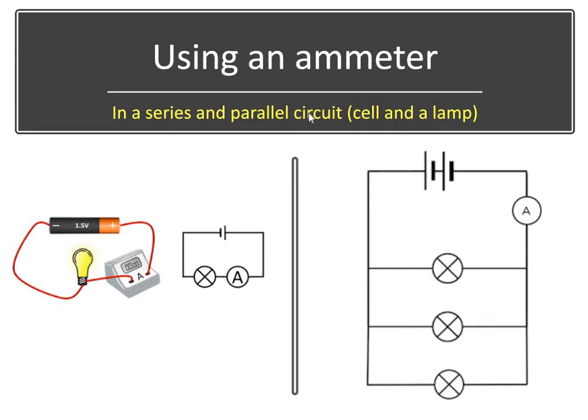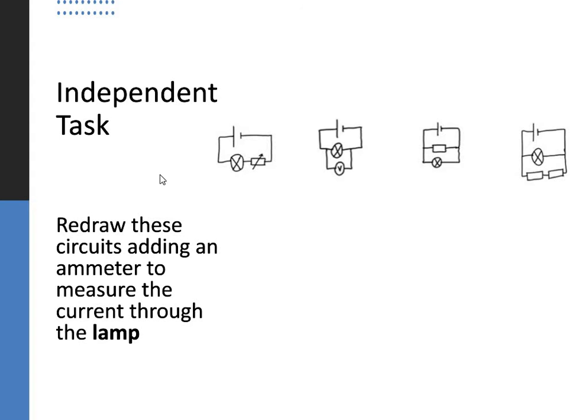So we use an ammeter in series and parallel circuits. Here's an ammeter placed in our series circuit, our single loop. Here's an ammeter placed in a parallel circuit. There's three bulbs here, and here's our ammeter. So the first independent task that you can do, and pause the video to do it, is to redraw these circuits, these four circuits, adding an ammeter to measure the current going through the lamp. So where would you put the ammeter in these circuits? You'd like, if you could pause the video and have a go at doing that.